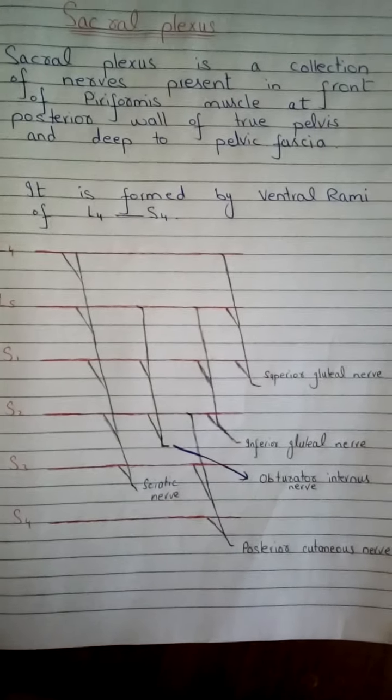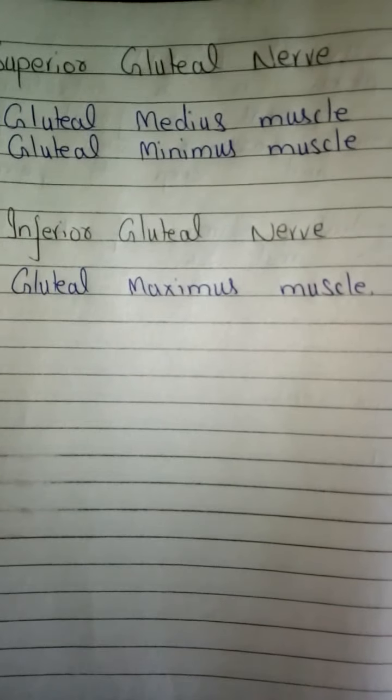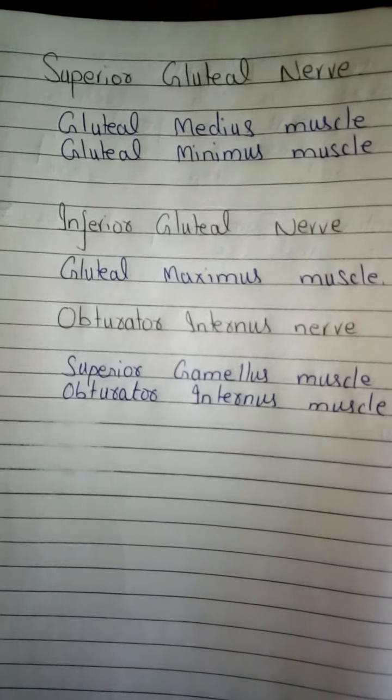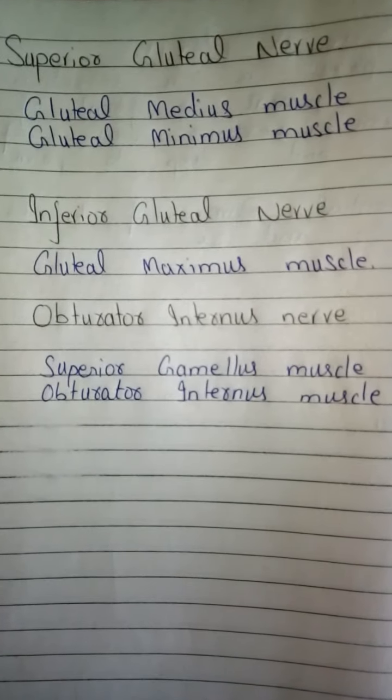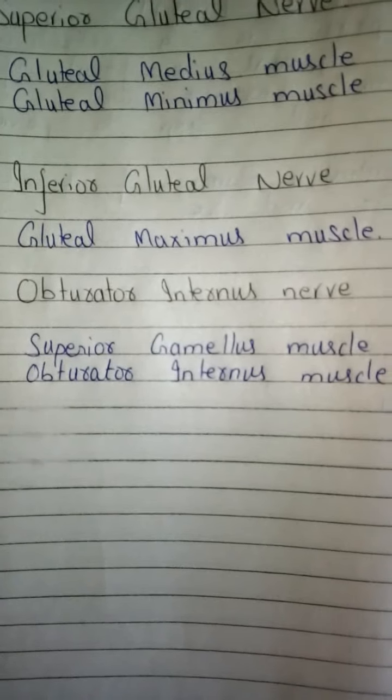Now I will explain the function of each nerve. The superior gluteal nerve, given by L4, L5, and S1, supplies the gluteus medius and gluteus minimus muscles. The inferior gluteal nerve gives innervation to the gluteus maximus muscle. The obturator internus nerve, given by L5, S1, and S2, supplies the superior gemellus and obturator internus muscles.